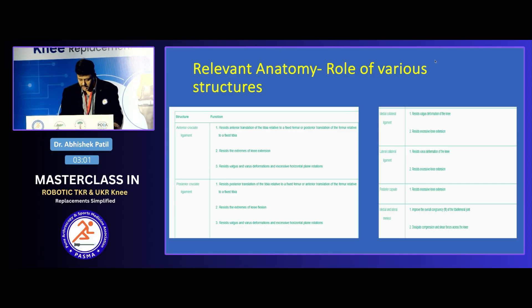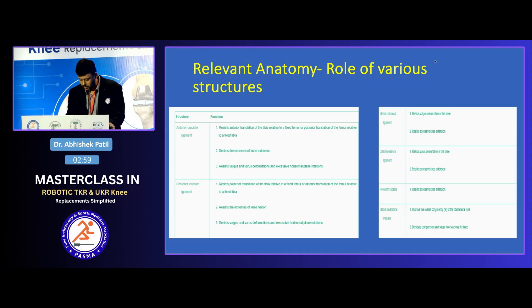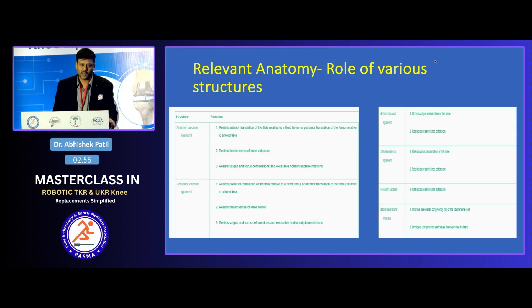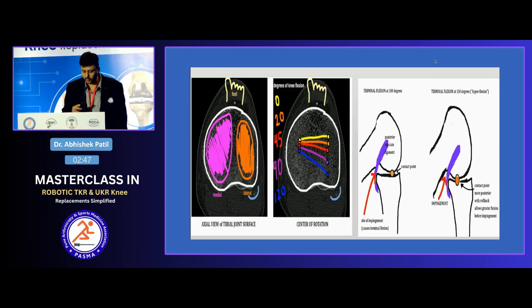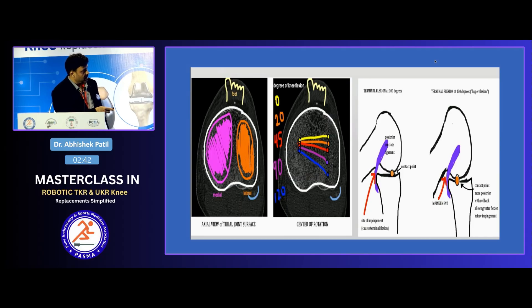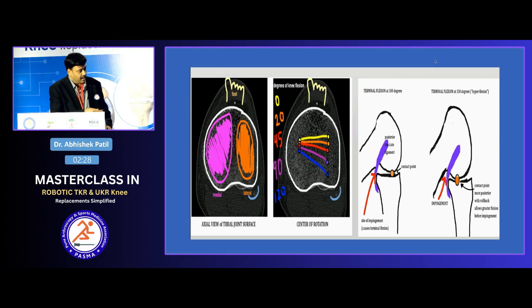The posterior capsule does only one job — it maintains the extension gap and prevents hyperextension. Menisci are unfortunately removed in total knee replacement and therefore are not relevant. The discrepancy between the medial and lateral sides results in contact points at various degrees of flexion that are very close to each other on the medial side, but very far apart on the lateral side — confirming that most motion happens on the lateral side.